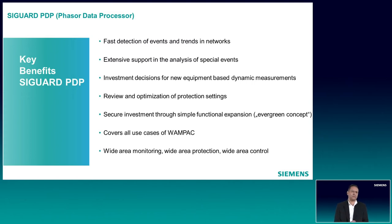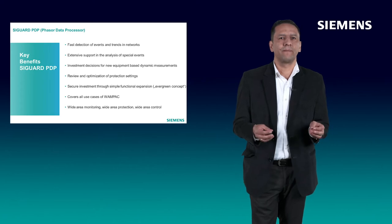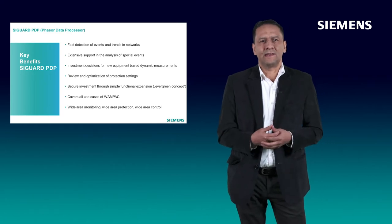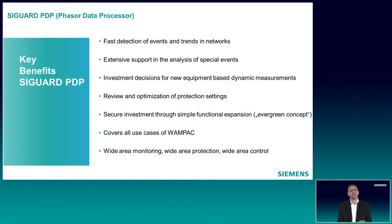What are the key benefits of SAGUARD PDP? The first one is fast detection of events and trends in the networks. The second one, extensive support in the analysis of special events. Based on extensive analysis, investment decisions for new equipment can be accelerated or delayed. Review and optimization of protection settings can also be done. In order to secure the investment, we can use the Evergreen concept that comes with SAGUARD to upgrade the system. Last but not least, SAGUARD PDP covers all the use cases of WAMPAC, like Wide Area Monitoring, Wide Area Protection, and Wide Area Control.